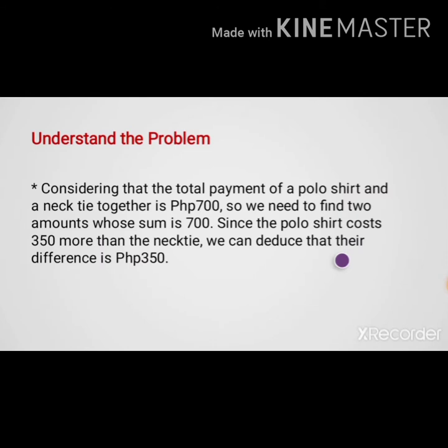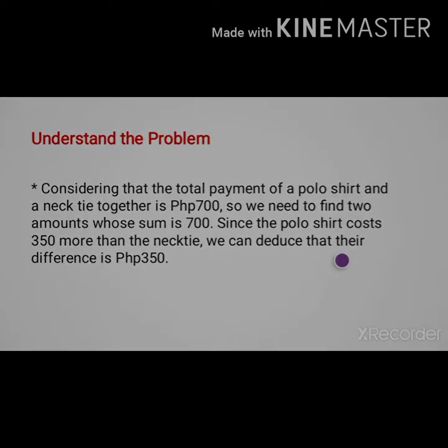First, understand the problem. Considering that the total payment of a polo shirt and a necktie together is 700 pesos, we need to find two amounts whose sum is 700. Since the polo shirt costs 350 more than the necktie, we can deduce that their difference is 350 pesos.